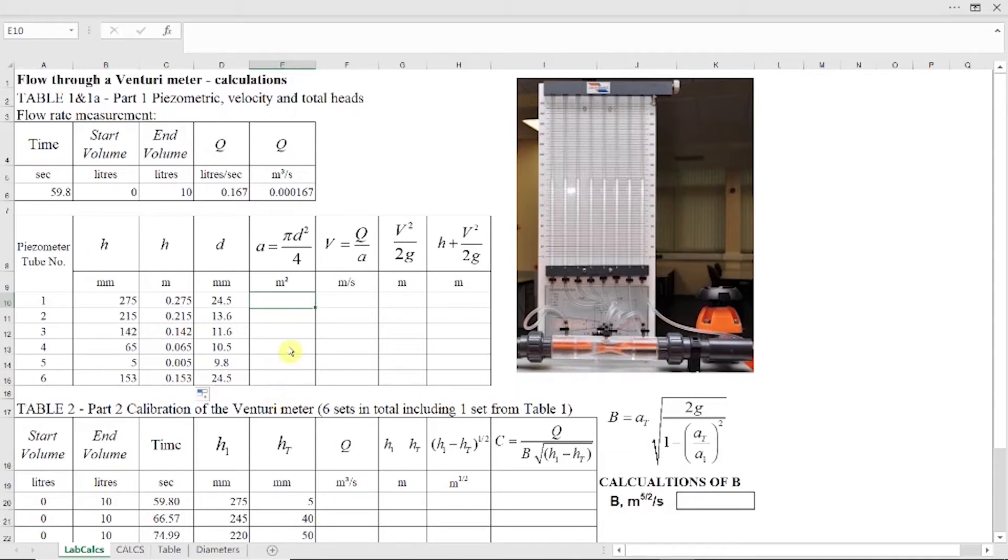So the cross section area is equal pi, standard formula, pi, open bracket, close bracket, this is function in Excel, multiply by diameter in power 2. Our diameter is in millimeters, therefore we need to convert into meters. So I open bracket, click on diameter, divide it by 1,000, close bracket, and in power 2, and now divide by 4. I will drag this down later with all four columns together.